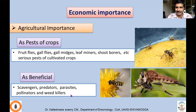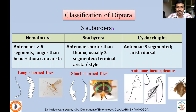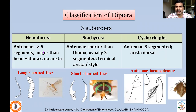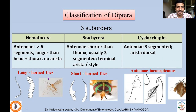Three suborders have been identified in Order Diptera: Nematocera, Brachycera, and Cyclorrhapha. Nematocerans have long antennae, more than six-segmented, longer than the head and thorax combined, with varied antenna types such as filiform or moniliform.